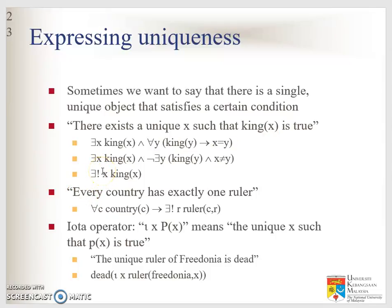To express uniqueness, we use the exclamation mark: there exists only one king, not some king — only one. A second example: every country has exactly one ruler, so for every country c, there exists one unique ruler r.